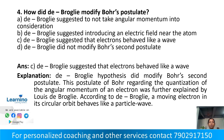How did de Broglie modify Bohr's postulate? Option A: de Broglie suggested not taking angular momentum into consideration. Option B: de Broglie suggested producing an electron field near the atom. Option C: de Broglie suggested that electrons behaved like a wave. Option D: de Broglie did not modify Bohr's second postulate.